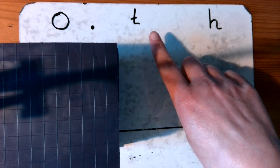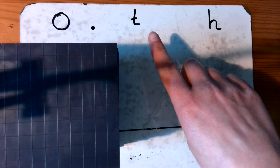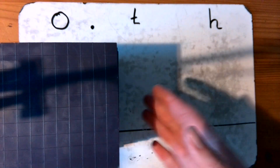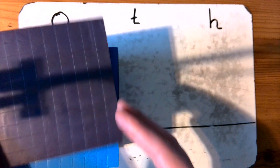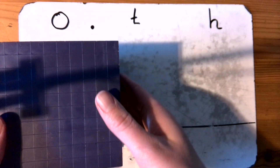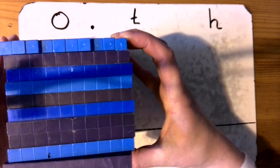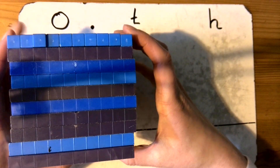So we have one here, and the next one we have our tenths. To get our tenths we're going to take our whole and divide it into ten equal parts. You can see it's been done already.